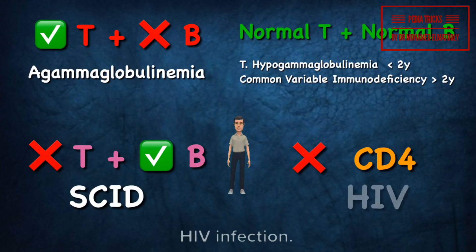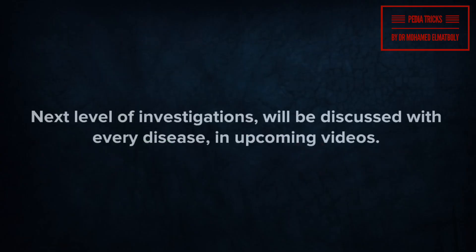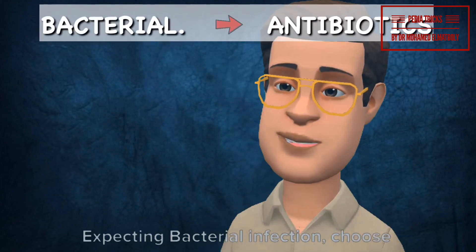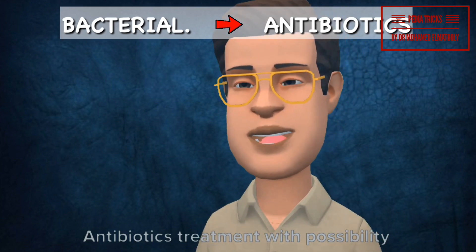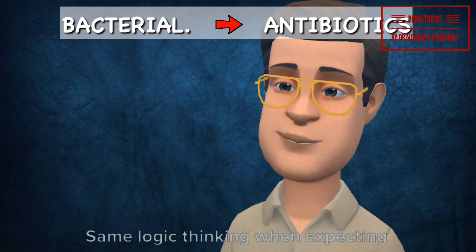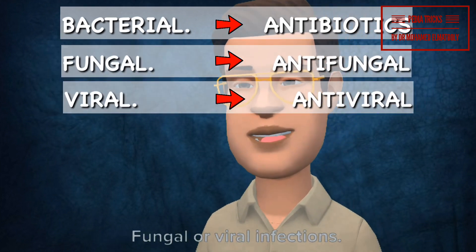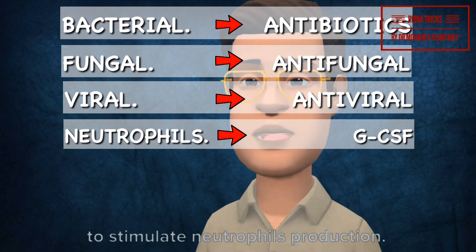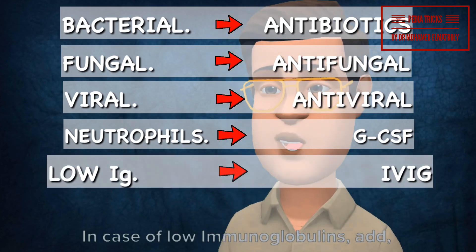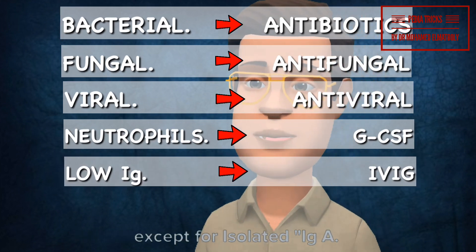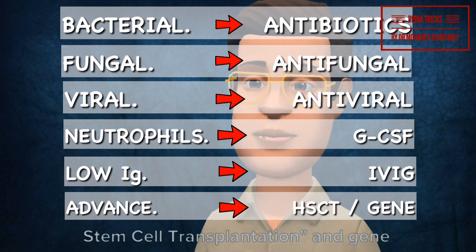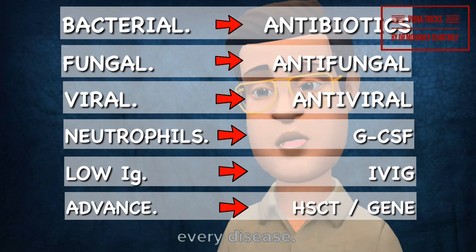Next-level investigations will be discussed with every disease in upcoming videos. Finally, reaching the treatment station — please don't memorize. When expecting bacterial infection, choose antibiotic treatment with the possibility of adding prophylactic antibiotics if needed. Same logic applies when expecting fungal or viral infections. In case of neutrophil defect, add granulocyte colony-stimulating factor to stimulate neutrophil production. In case of low immunoglobulins, add intravenous immunoglobulin therapy, except for isolated IgA deficiency. Last resort will be hematopoietic stem cell transplantation and gene therapy, to be discussed with every disease.